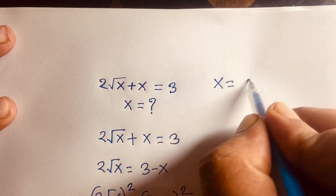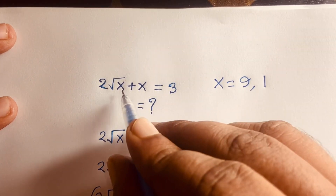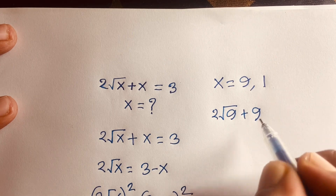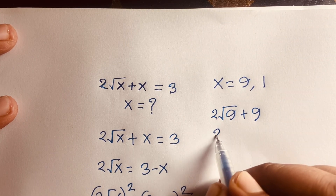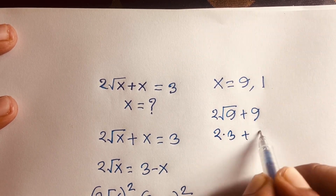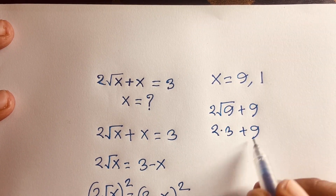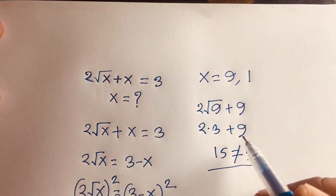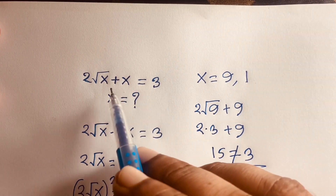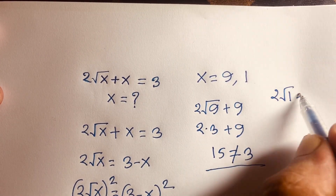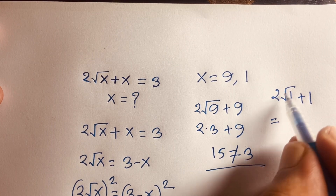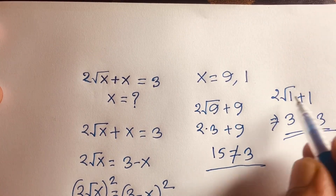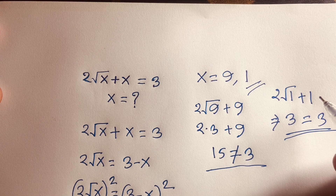Checking x = 9: 2√9 + 9 = 2×3 + 9 = 6 + 9 = 15, which does not equal 3. Checking x = 1: 2√1 + 1 = 2×1 + 1 = 2 + 1 = 3, which equals 3. So x = 1 is the correct answer. Thank you all.